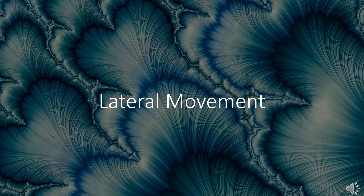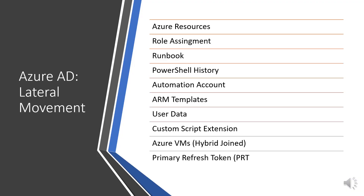Lateral Movement: After the first access on Azure AD is obtained, the next goal for the cyber attacker is lateral movement. The attacker tries to access different resources on Azure AD with the captured access token and aims to capture the access token of a more privileged user. Control steps include: Azure Resources, Role Assignment, Runbook, PowerShell History, Automation Account, ARM Templates, User Data, Custom Script Extension, Azure VMs, Hybrid Joined, and Primary Refresh Token (PRT).